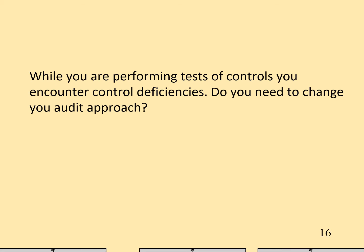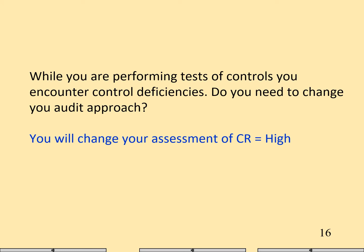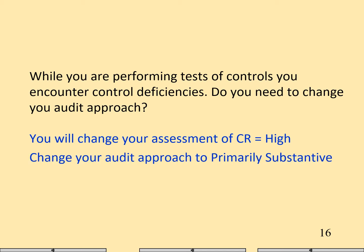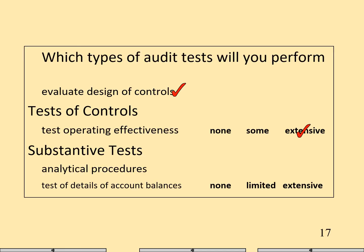Do you need to change your audit approach? Yes. And these are what I would want on the test: you'll change your assessment of control risk to high, controls are not effective, you'll change your audit approach to primarily substantive, and you'll perform extensive substantive tests. We've already evaluated the design of the controls and performed extensive tested controls, but they weren't effective. We do analytical procedures, and now we must do extensive substantive tests. This is the worst of all worlds — think of 'extensive' rhymes with 'expensive.' We spent a lot of money on tested controls, they didn't give us the assurance we need, so we're going to have to perform extensive substantive tests.